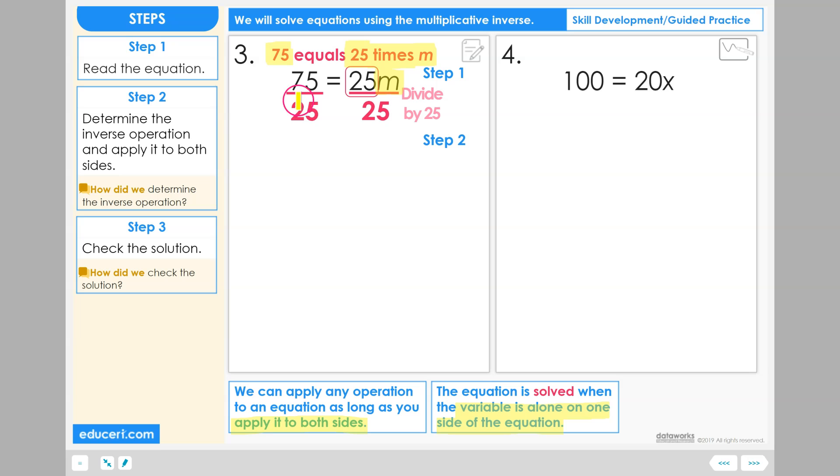75 divided by 25 equals 3. Like if you have three quarters you have 75 cents. 25 divided by 25 equals 1. So you have 1m, which is the same thing as just having m. 1 times m equals m, and we now have a solved equation. m equals 3.